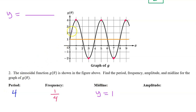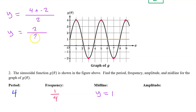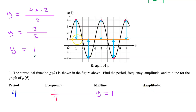You can also find the midline by taking the average of the highest value and the lowest value. So 4 plus negative 2 divided by 2 — that's 4 minus 2, which is 2 divided by 2, so we get y equals 1. Don't forget the y equals in front for the midline. The amplitude is the difference between the highest value and the midline, so 4 minus 1, which is 3.